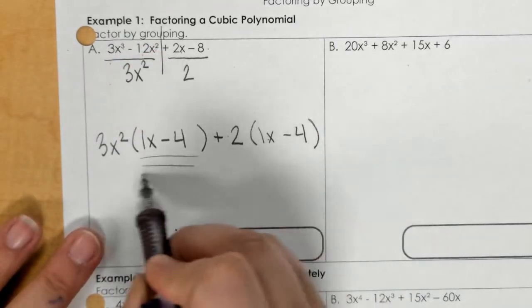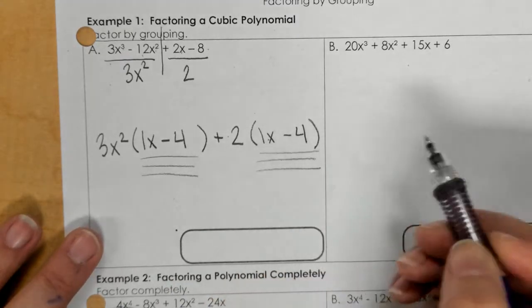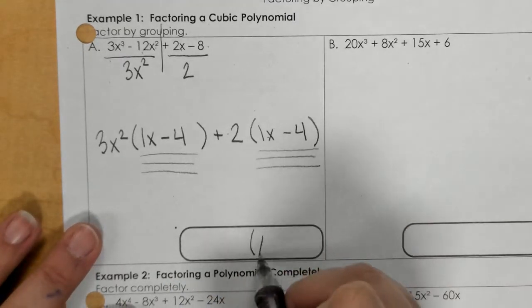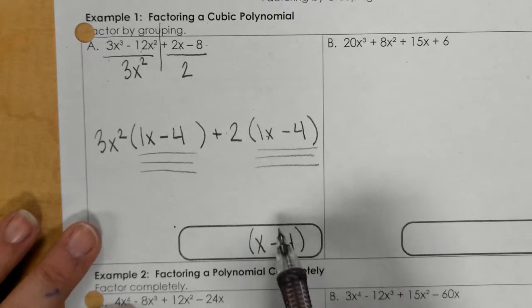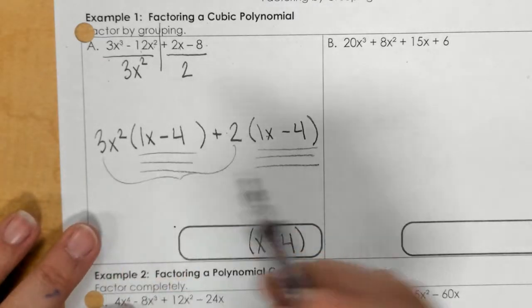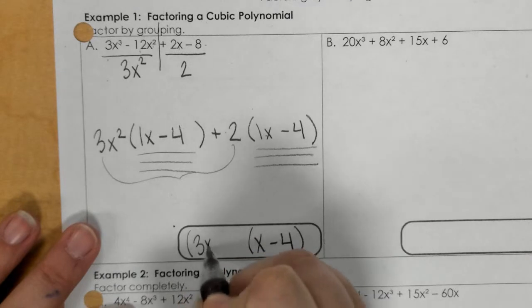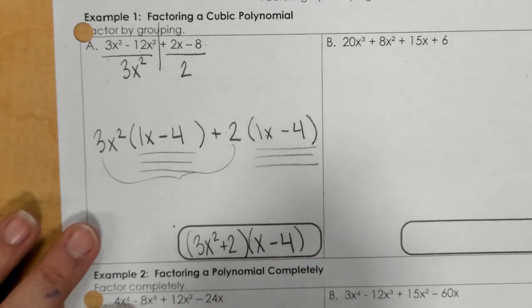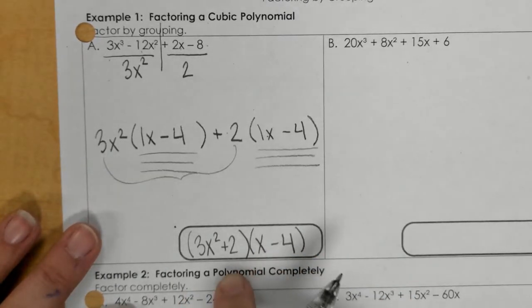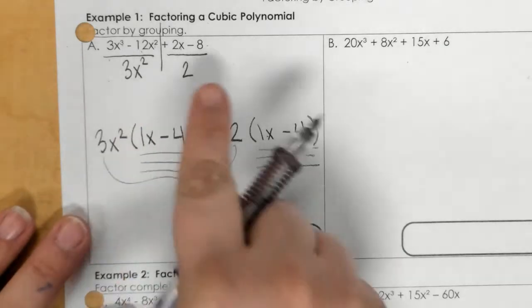Now, because these are matching, I'm going to write that down as 1, because they match. Then, my GCFs, I bring together, and write 3x squared plus 2. This is the factored form of this polynomial.